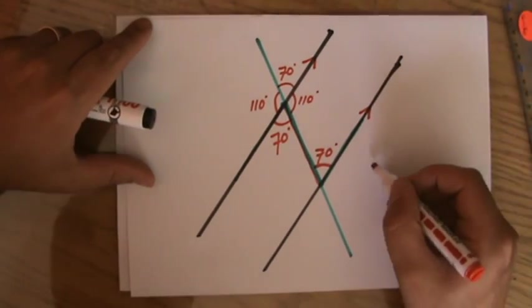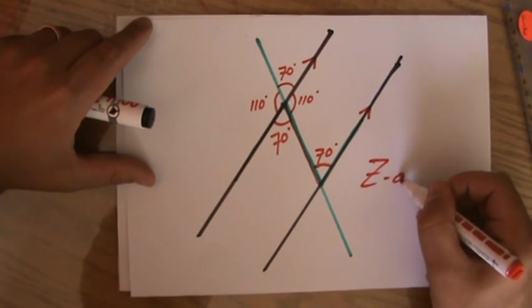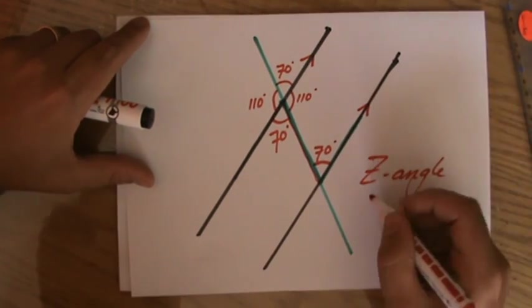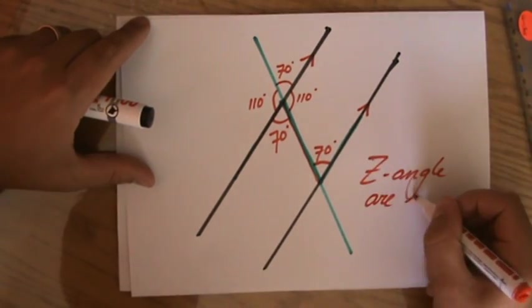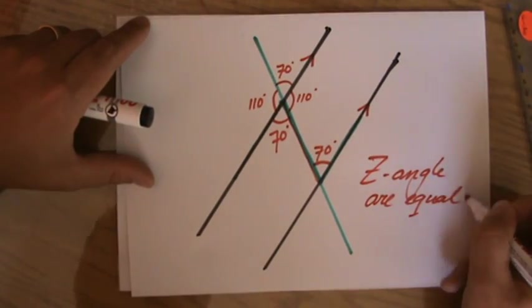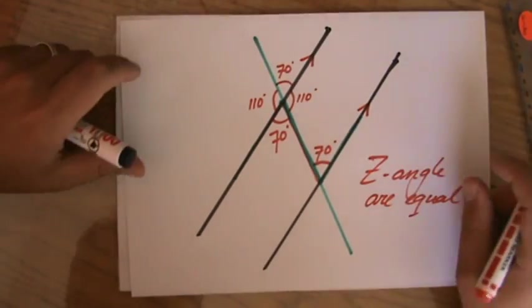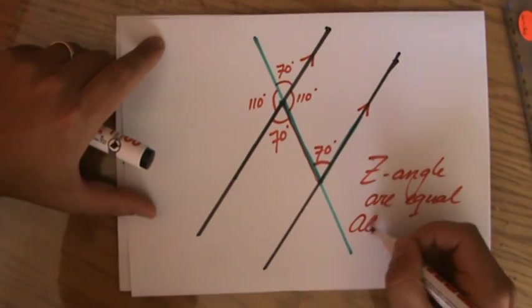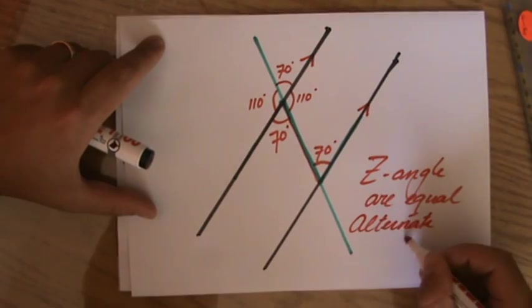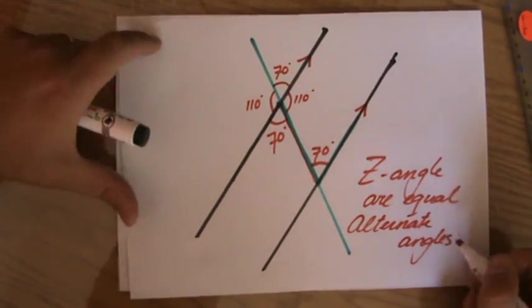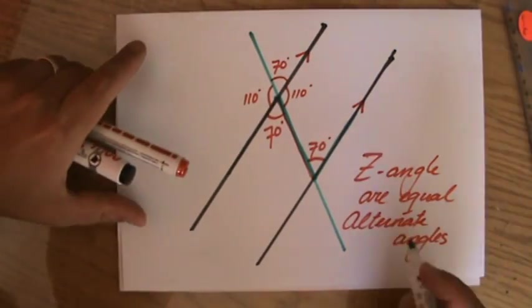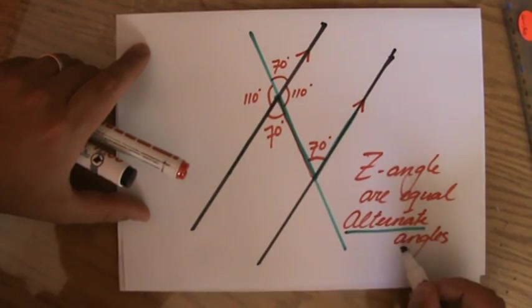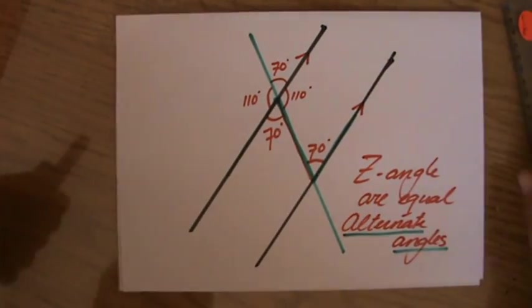So the Z angle are equal, but the Z angle is not the official term for it. That's more, let's say, oral language. If you write about it, we talk about alternate angles. Alternate angles or Z angles, but the official language is alternate angles. So please be familiar with those terms.